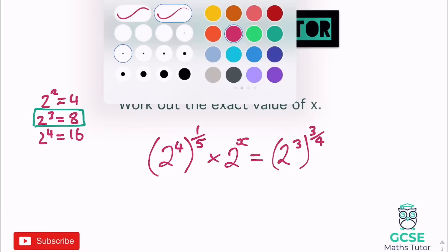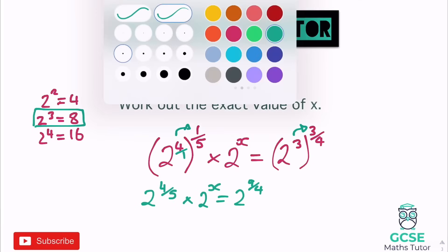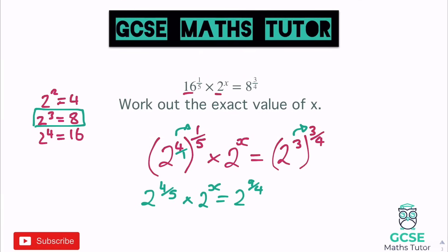Multiplying the powers inside the brackets: 4 times a fifth is 4 fifths, giving us 2 to the power of 4 fifths. Times 2 to the power of x. On the right: 3 times three-quarters is 9 quarters, giving us 2 to the power of 9 quarters.